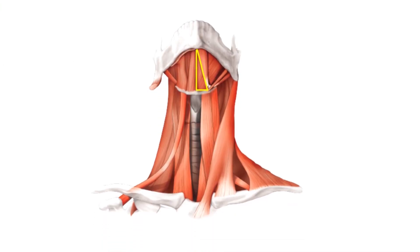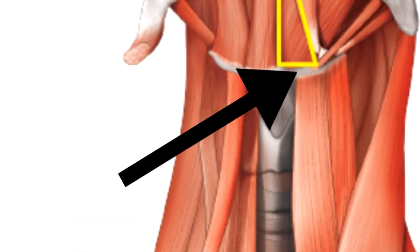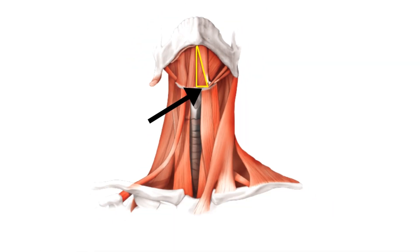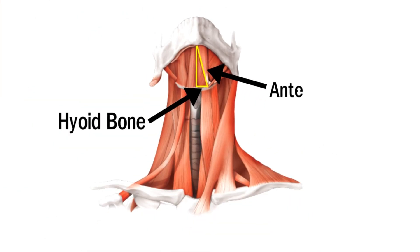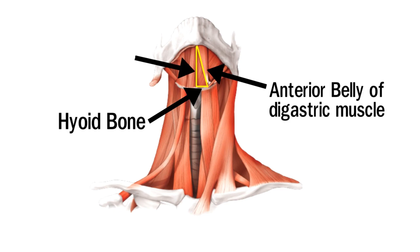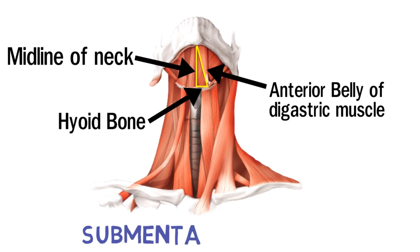Let's have a look at this triangle. This is the inferior border, that is the hyoid bone. This is the lateral border, that is the anterior belly of the digastric. And lastly, this is the medial border, that is the midline of the neck. So this is the submental triangle.